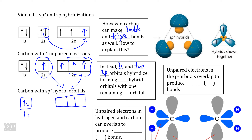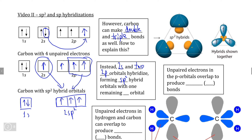This means we have three orbitals, each with an unpaired electron. Because the orbitals only involve the 2s subshell and two of the 2p orbitals, these are what we call sp2 hybrid orbitals, rather than sp3 orbitals.